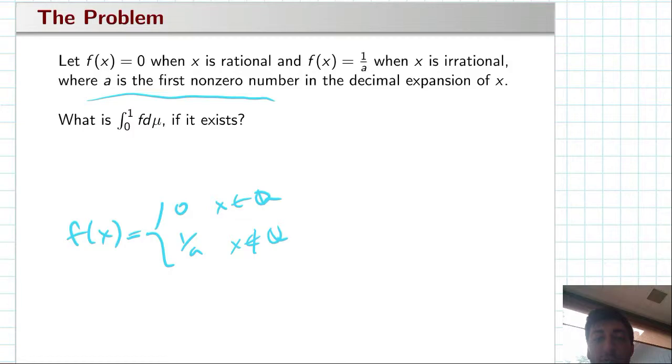This a number is the first non-zero number in the decimal expansion of x. So for example, if we had the irrational number 0.11343, then the value of a would just be one, and f of x at this number x would be one over one, which is just one.